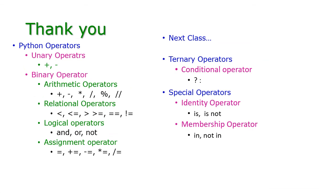So up to this we have seen Python operators — unary operator and binary operator. Unary operator: unary minus. Binary operator: arithmetic, relational, logical, and assignment operators. In the next class we will see the ternary operator and special operators. Thank you.